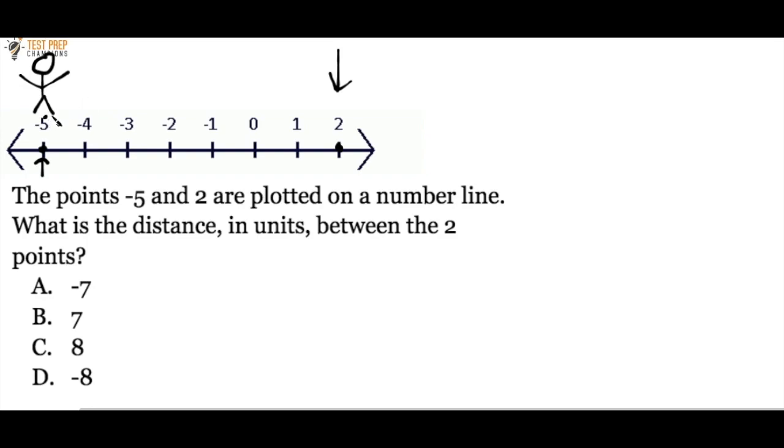So if our person goes from negative 5 to negative 4, that's 1, then 2, 3, 4, 5, 6, 7. And just like that, we've got 7 as our answer.